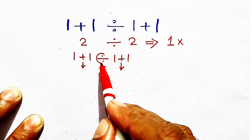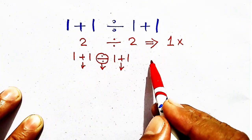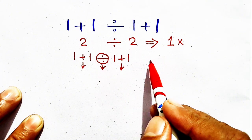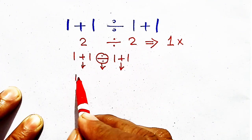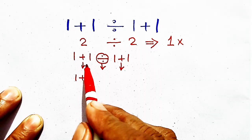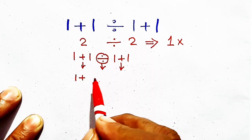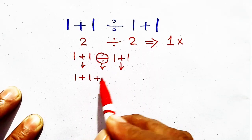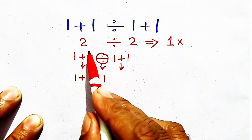So first of all, we have to do division according to BODMAS or PEMDAS. So 1 plus 1 is not solved first. 1 divided by 1 is 1. And finally, this is 1.